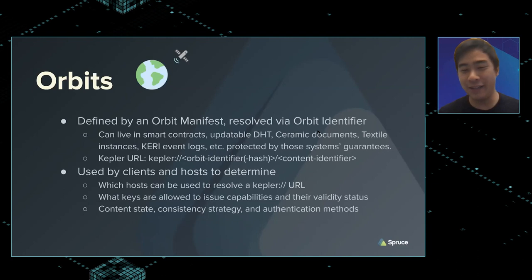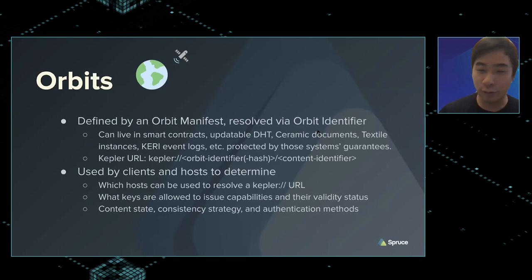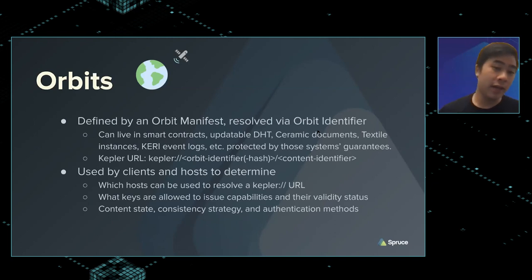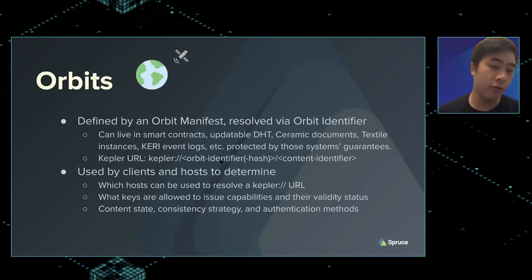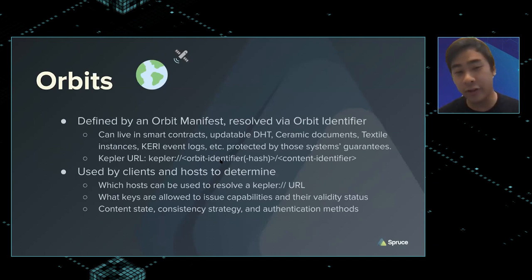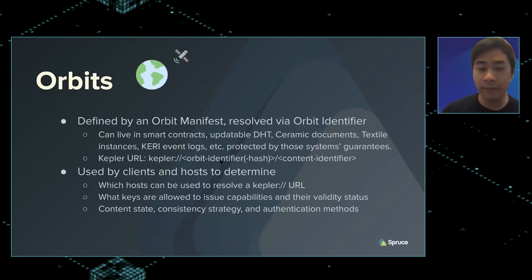I spoke to the OrbitDB team and thankfully it seems they're not too upset that we decided to call Kepler's overlays orbits — but they are different. Orbit manifests can live as ceramic documents, textile instances, or even KERI event logs. In the decentralized identity community, KERI — the key event infrastructure — can also serve this purpose. The idea is a new URL where hosts are defined in a smart contract controlled by the user, so you truly own your data and can direct people to find the hosts authorized to host it. We use content identifiers as you'd expect in IPFS.